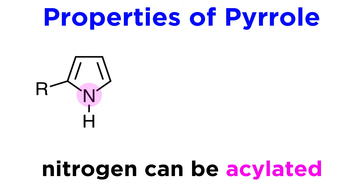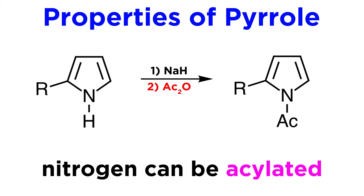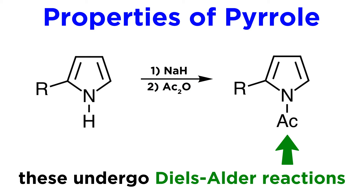However, the nitrogen can be acylated under strongly basic conditions. Using something like sodium hydride or butyllithium, deprotonation occurs at the nitrogen atom, which will react with acetic anhydride to become acetylated. N-acylated pyrroles can undergo smooth Diels-Alder reactions just like furans, so this can be of synthetic utility.